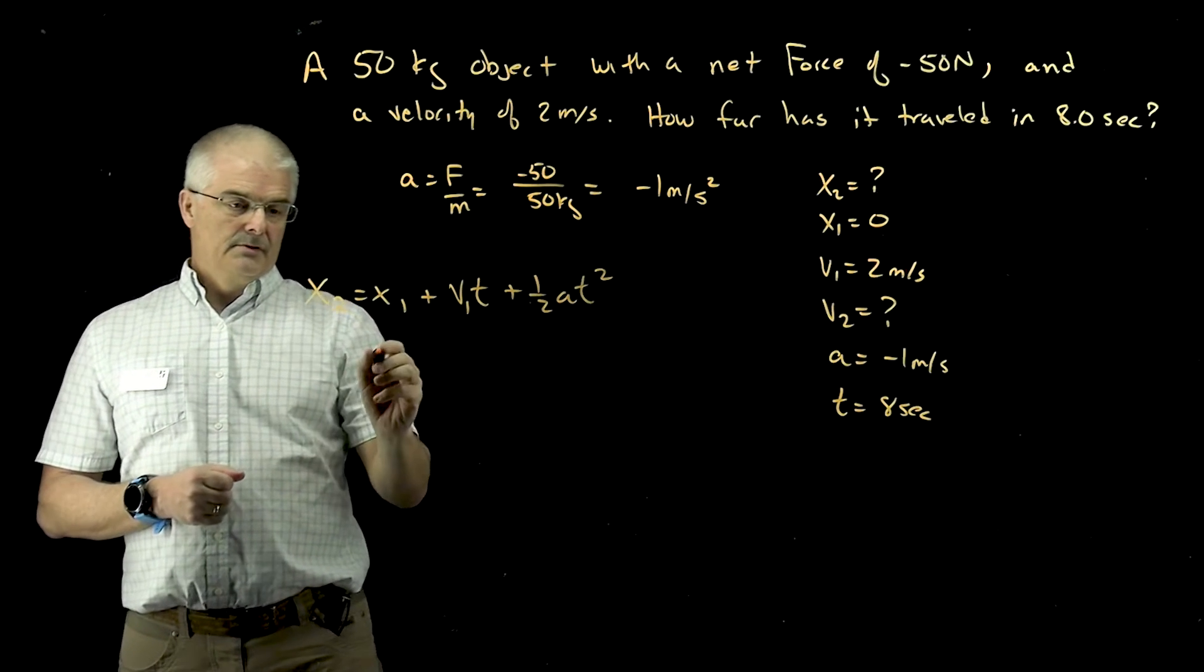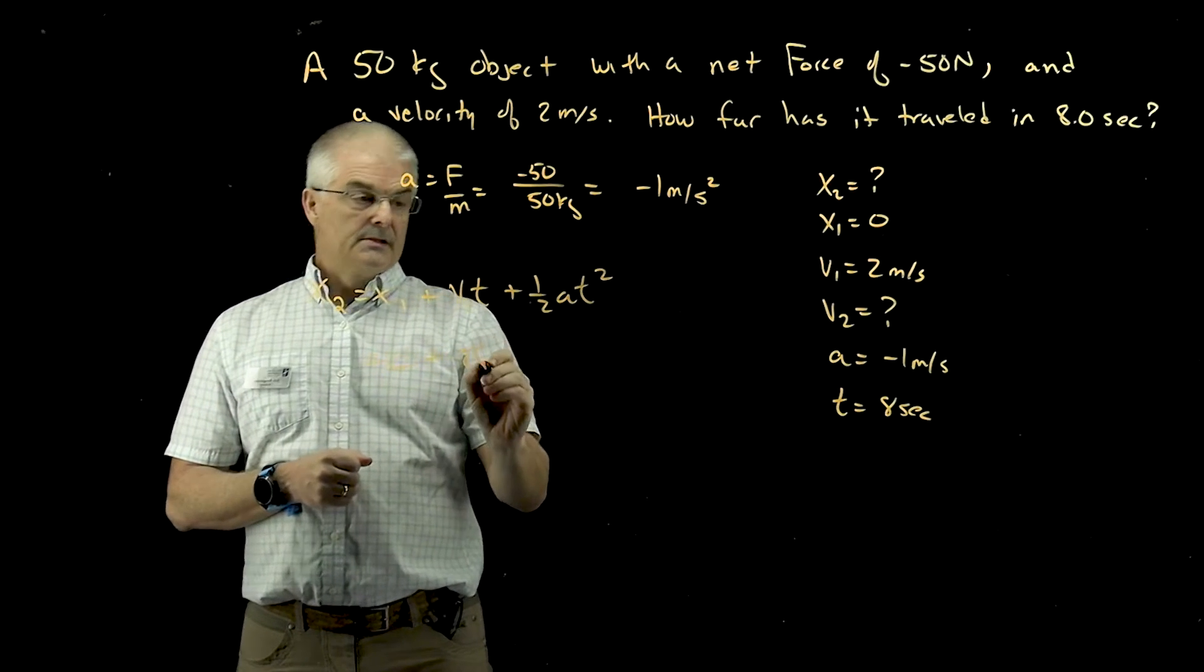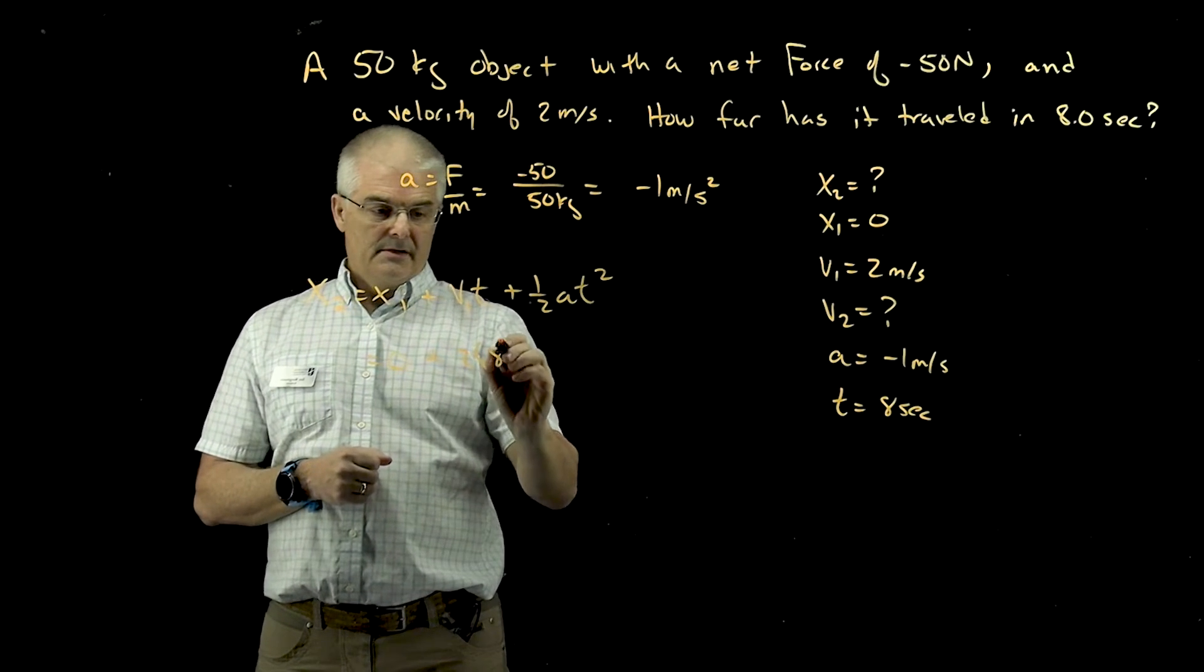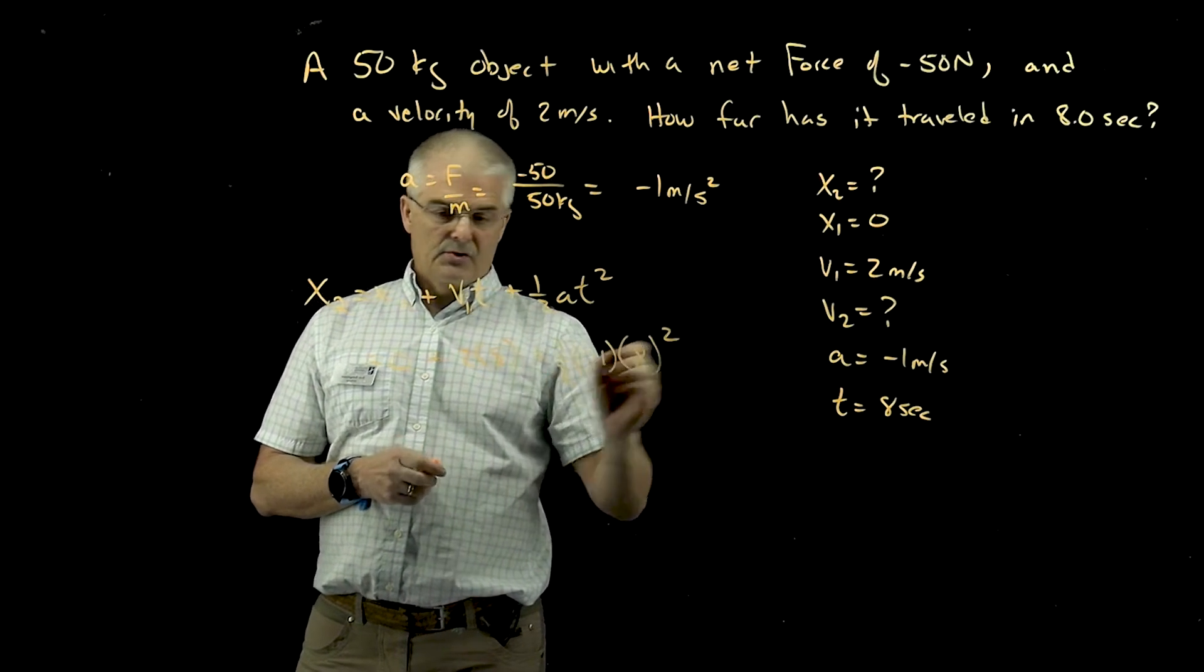So X2 is equal to 0 plus V1 is 2 times 8 seconds, right? Plus 1 half times negative 1 times 8 squared.